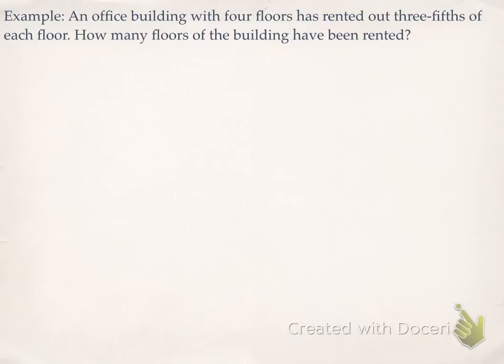And the last example says that an office building with 4 floors has rented out 3 fifths of each floor. How many floors of the building have been rented? Well, this question says I have 4 floors and 3 fifths of each floor, of meaning multiply, and 3 fifths is what I'm actually renting out. So 4 times 3 fifths.